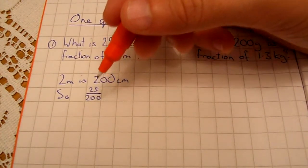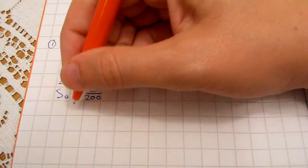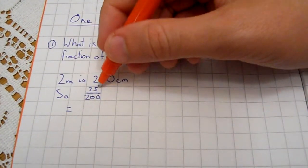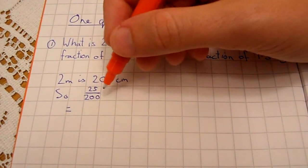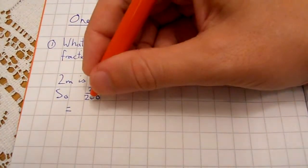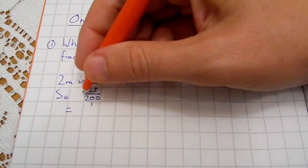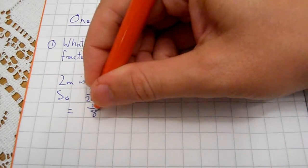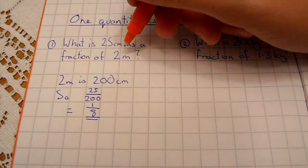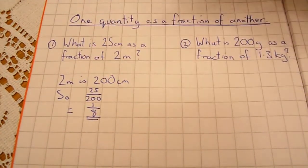That isn't finished, we need to simplify. So to simplify, what we'd have to do is say, what number is a factor of both? Well, simply speaking, 25 is a factor of both. 25 divided by 25 is 1. 200 divided by 25 is 8. So that's our answer. So 25 centimetres as a fraction of 2 metres is 1/8.